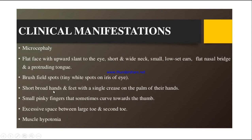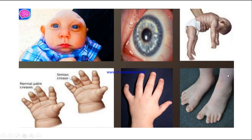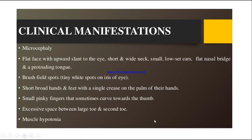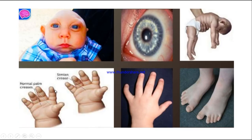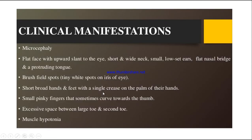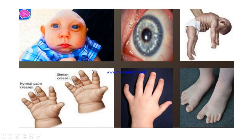Children will have short, broad hands and feet with a single crease on the palm of their hands. In a normal child there are multiple lines, but in Down syndrome babies there will be a single line. They will also have small pinky fingers that sometimes curve towards the thumb.